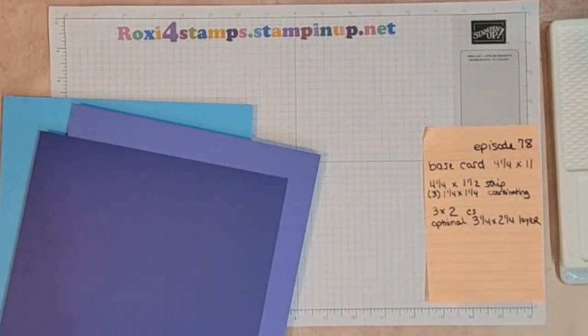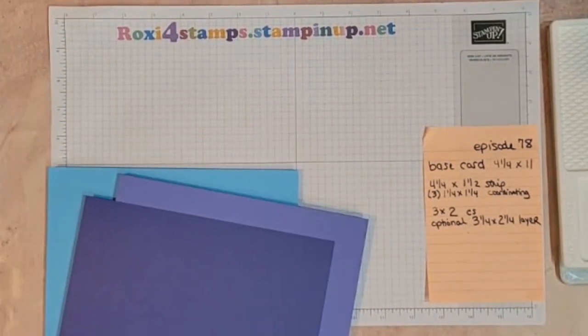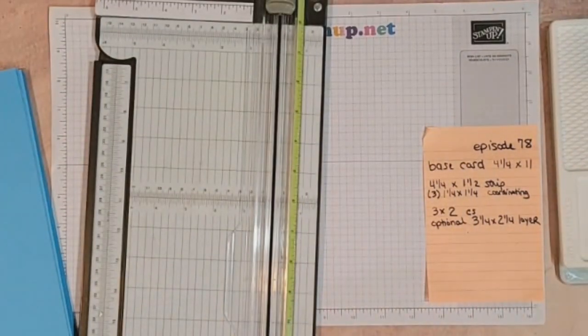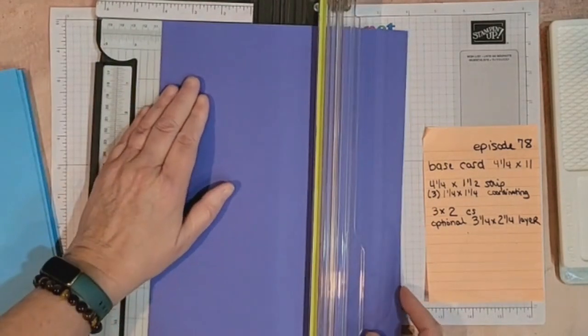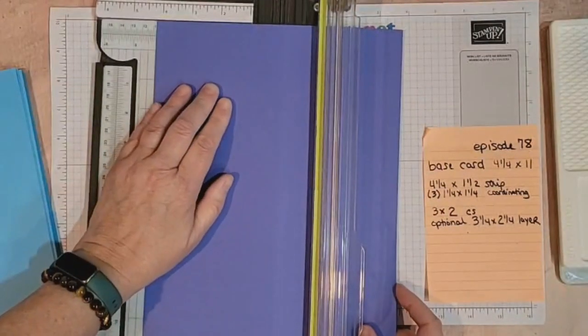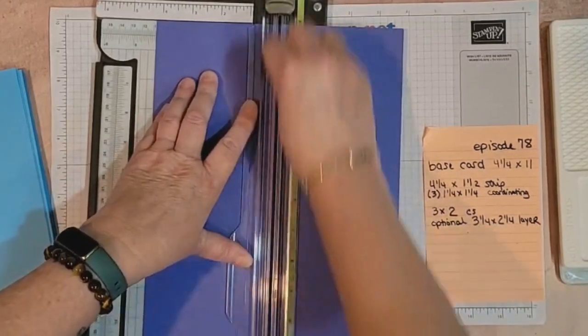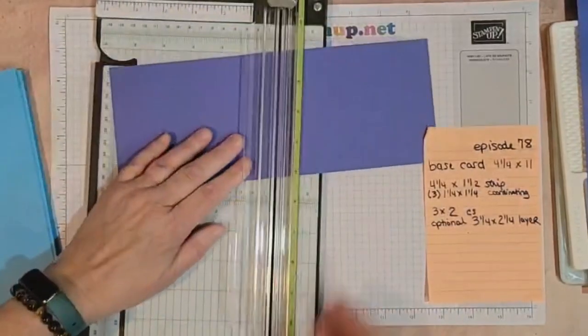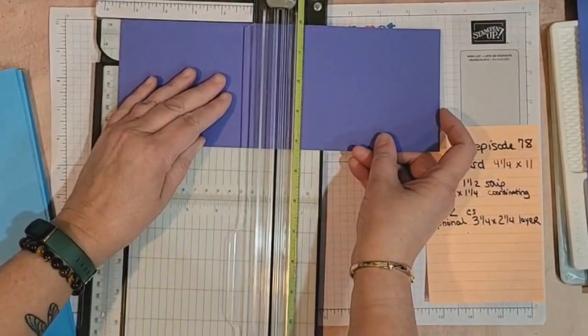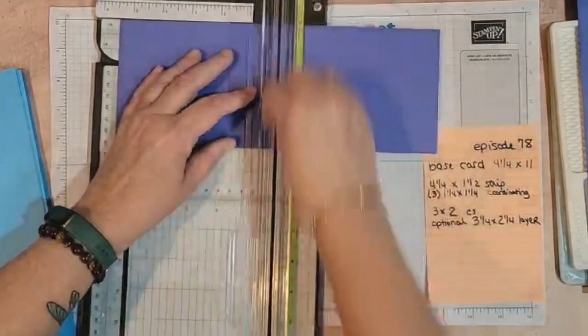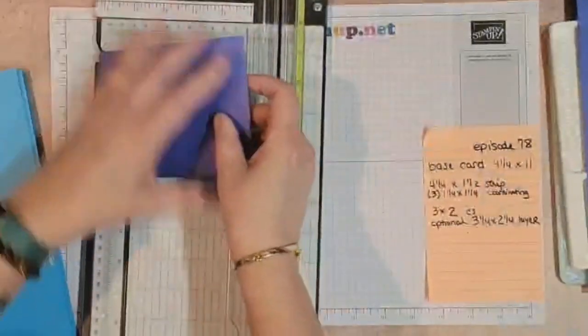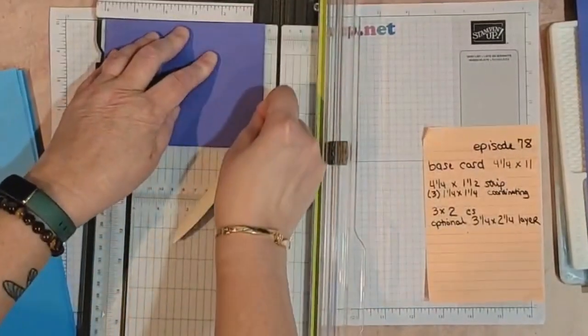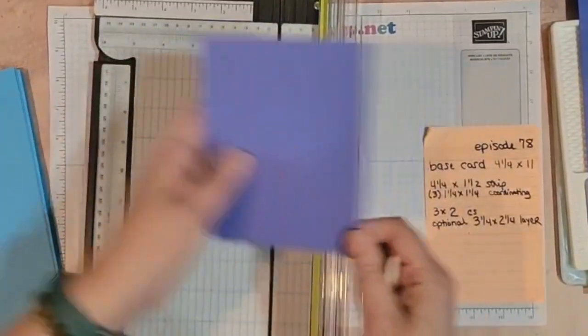All right so let's go ahead. Let me put my magnifying glass off to the side there. So I think I'm going to do my four and a fourth by eleven in this. And yes you can do this as an eight and a half by five and a half scored at four and a fourth. I just thought for once we would do it this way because this is the style people usually don't do. They usually always go to the eight and a half by five and a half but I thought it would be good just to go ahead and do this one this way. So there's our base card.